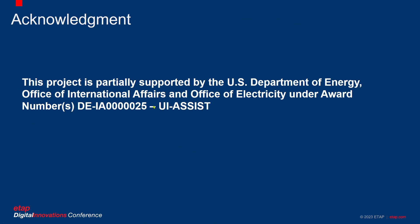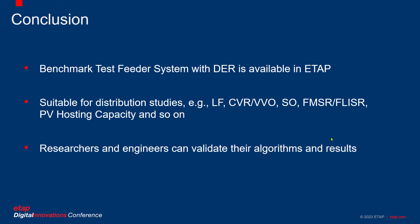Before I conclude, I would like to acknowledge that this project has been partially sponsored by the U.S. Department of Energy, Office of International Affairs and Office of Electricity. In conclusion, we have essentially built and analyzed the IEEE 123 node distribution system, which is available in ETAP as a benchmark test feeder system. It is suitable for conducting distribution studies such as load flow, volt-var optimization, switching optimization, PV hosting capacity, FMSR, and so on. It is useful for researchers and engineers to validate their algorithms and results. Thank you very much.